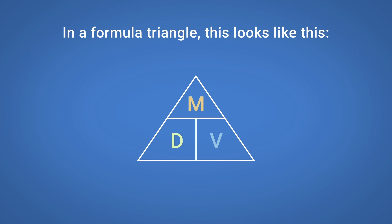For example, to calculate mass, cover up the M to reveal the formula: density multiplied by volume. To calculate volume, cover up the V to reveal the formula: mass divided by density.